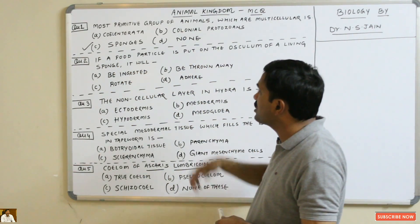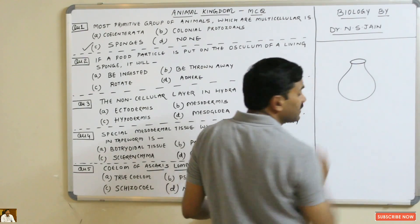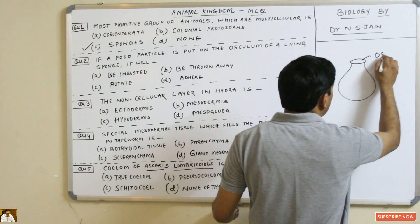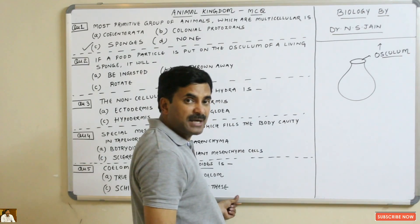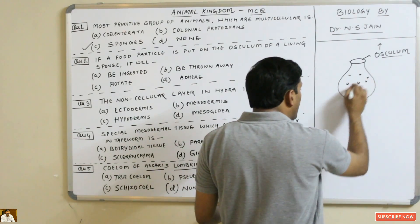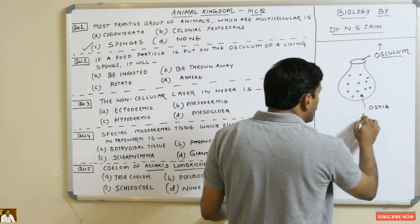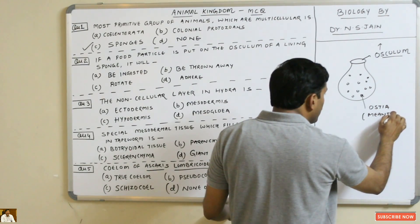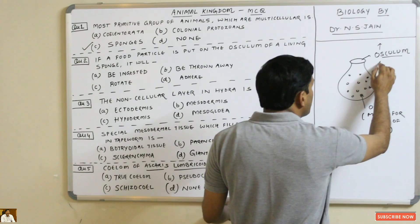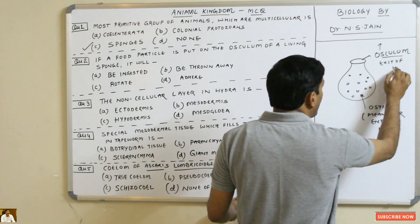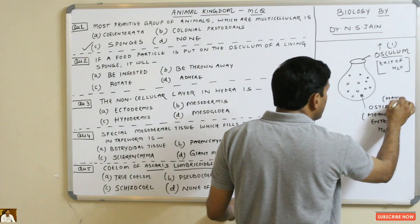The second question is: if a food particle is put on the osculum of a living sponge, what will happen? In sponges, there is one pore at the top known as the osculum, through which water exits. There are many small pores on the body through which water enters, known as ostia. Ostia are for entry of water and the osculum is for exit.